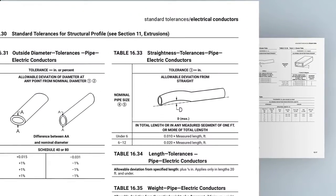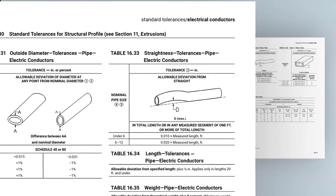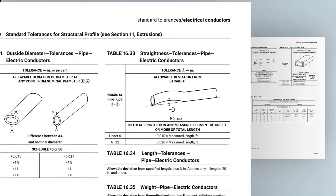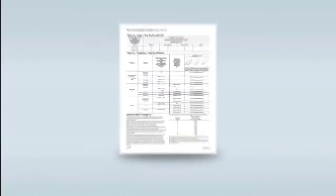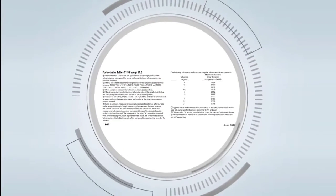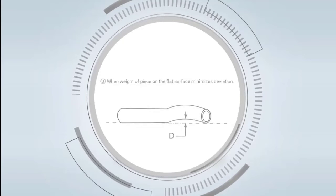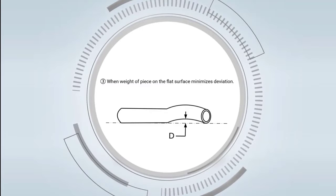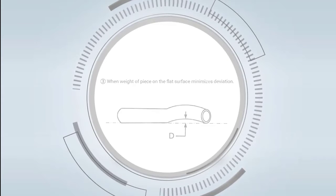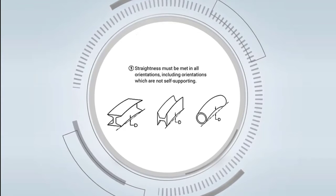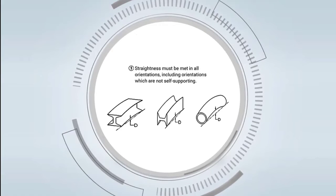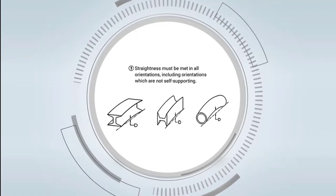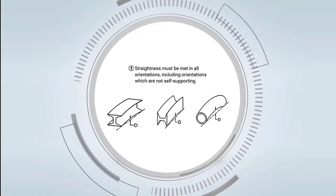The tables contain straightness tolerances expressed on a per-foot basis that can apply over the full length as well as shorter distances. There are also important footnotes for each table. Two common ones are that straightness tolerances apply when the weight of the piece resting on a flat surface minimizes bow or the amount of curvature, and straightness must be met in all orientations including those that are not freestanding or self-supporting. For example, a rod or tube may need to be propped up to hold the orientation for measuring purposes.